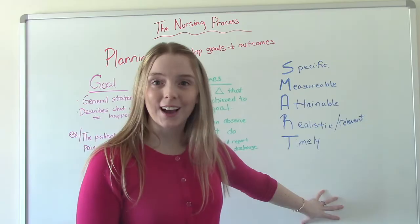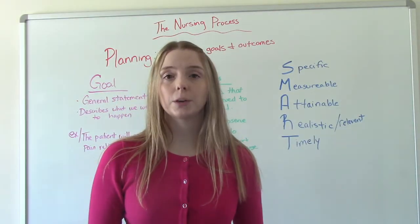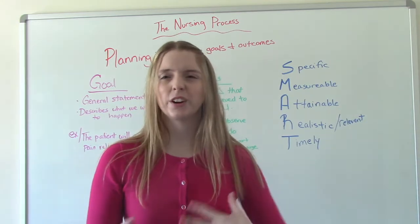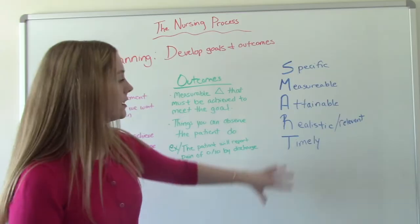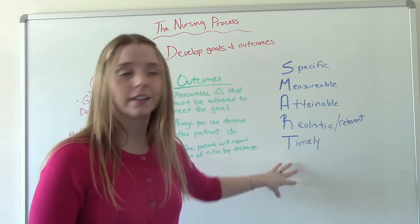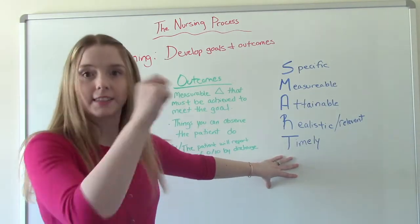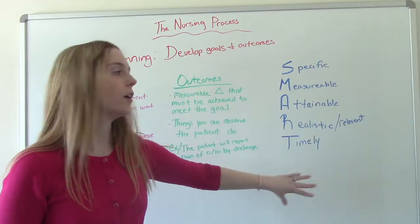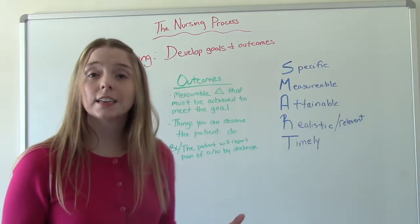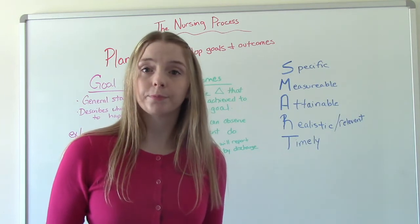Some outcomes are going to be very short-term — by the end of the shift. Some are going to be long-term, especially if you are a community health nurse or working in case management outside of a hospital setting. Your time frames could be a month, six months, or a year if you're dealing with chronic disease, and that's okay. Think about the time in relation to what you want them to do — is it realistic for them to achieve it in that time frame? If not, change the time frame, and that's okay. This is planning, the third step in the nursing process.